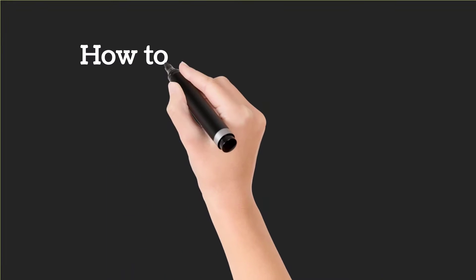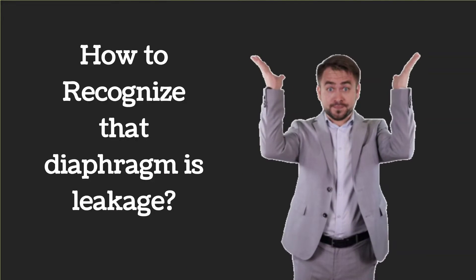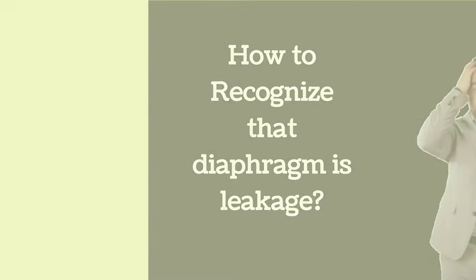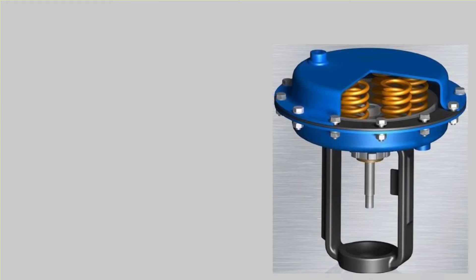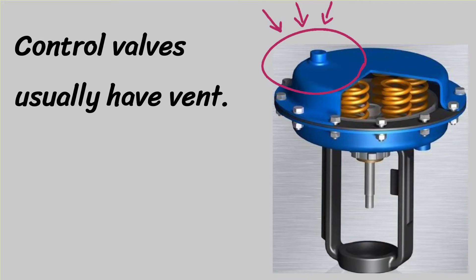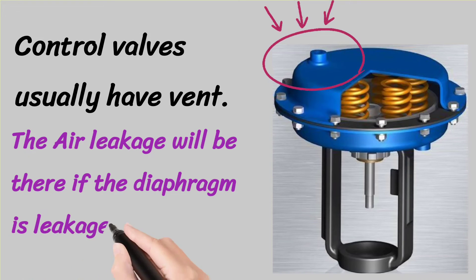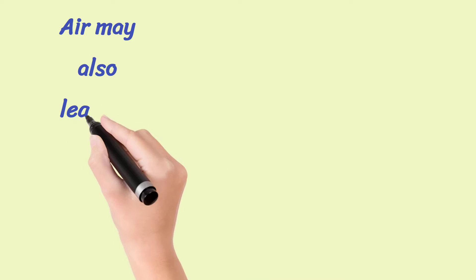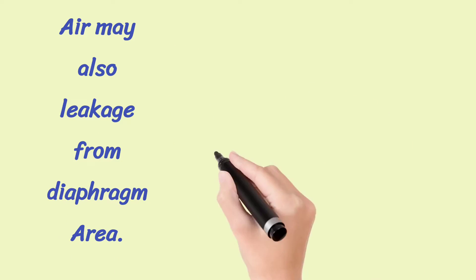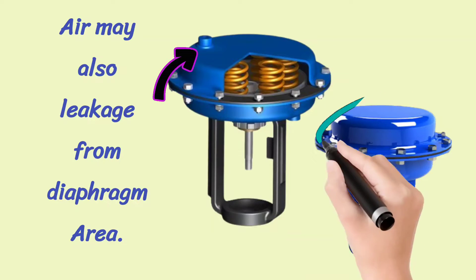Now, we will see how to recognize that control valve diaphragm is leakage. Control valves usually have a vent. You can see this by the circle shown. If the diaphragm is leakage, air leakage will be there from this vent. Air may be leakage from the control valve diaphragm area, as shown by the arrow and the circle.